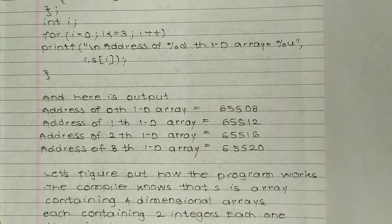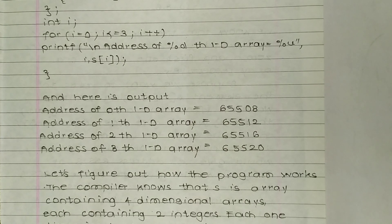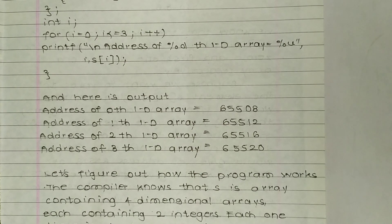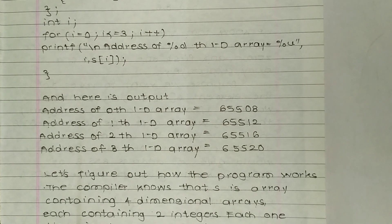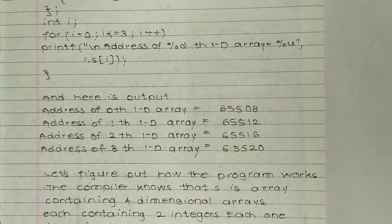The output shows: address of the 0th 1D array is 6550 8; address of the 1st 1D array is 6551 2; address of the 2nd 1D array is 6551 6; and address of the 3rd 1D array is 6552 0.